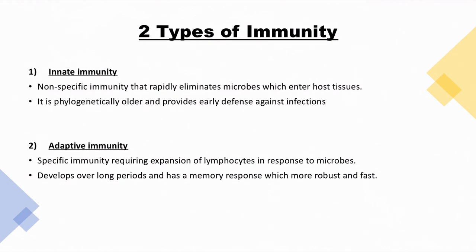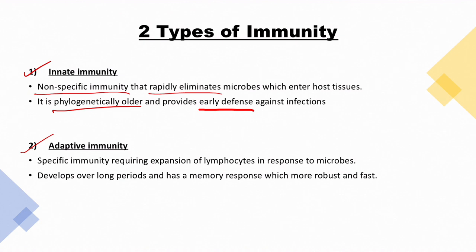What are the two types of immunity? We have innate immunity and adaptive immunity. Innate immunity is non-specific immunity that rapidly eliminates microbes which enter host tissues. It is phylogenetically older and provides early defense against infections. In contrast, adaptive immunity is specific immunity — it requires expansion of lymphocytes, takes time to develop, and has a memory response which is more robust and fast.